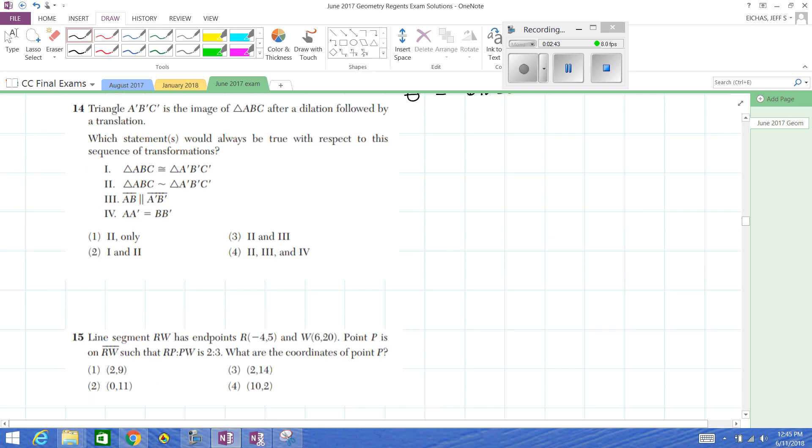So it is a dilation followed by a translation. We can't promise that those two images are going to be congruent. What's great about dilations is they do preserve slope. Now so do translations. So both dilations and translations preserve slope. AB will, without much thought at all, have to be parallel to A prime B prime. So that's got to be true.